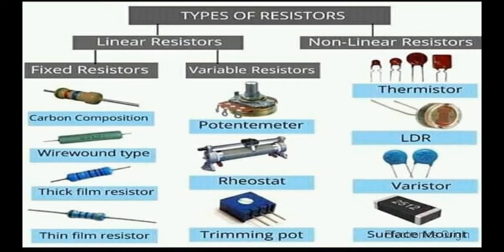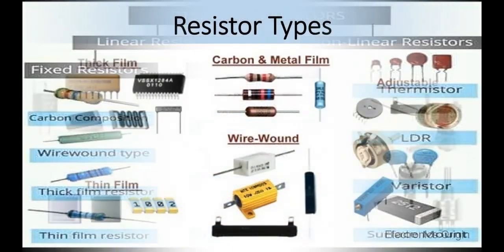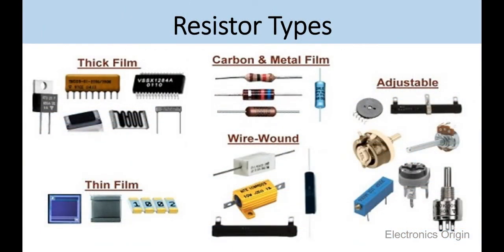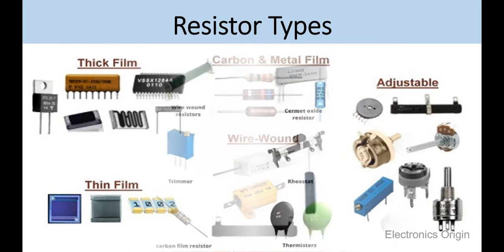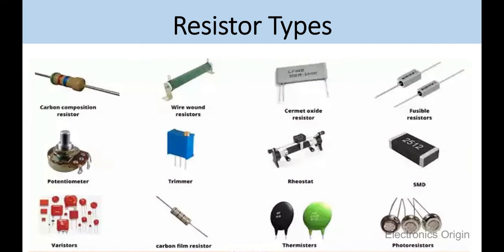Variable resistors have an adjustable resistance value. Most variable resistors are adjusted by mechanical movement. When they are used as a variable voltage divider they are called potentiometers. When they are used as variable resistance to control the current in the circuit they are called rheostats.